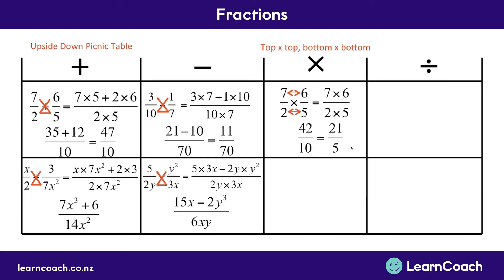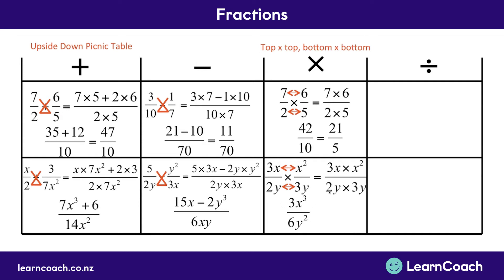But now let's look at this when we're using algebraic symbols. Here we have 3x divided by 2y multiplied by x squared divided by 3y. We're still going to do top times top and bottom times bottom. So we have 3x multiplied by x squared on the top and 2y multiplied by 3y on the bottom. Simplifying this down, 3x multiplied by x squared gives us 3x to the power of 3, and if we multiply 2y by 3y that gives us 6y squared down the bottom of the fraction. We can simplify the numbers — 3 divided by 6 — giving us a final answer of x cubed over 2y squared.